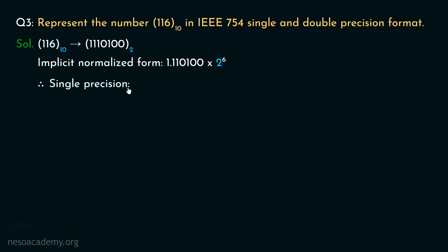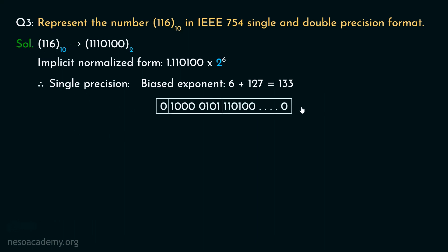For single precision, the biased exponent is calculated as the true exponent 6 plus the bias 127, giving 133. In the 8-bit exponent field, we place 1s under place values 128, 4, and 1: 128 plus 4 is 132, plus 1 gives 133. The sign bit is 0 (positive number). The mantissa bits after the radix point are 1, 1, 0, 1, 0, 0 with the remaining bits filled with zeros.